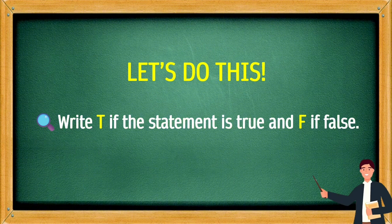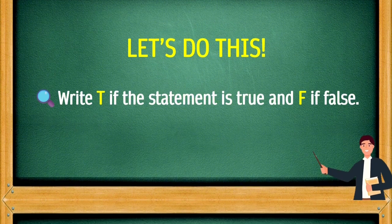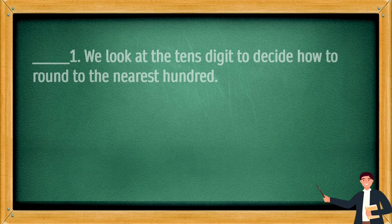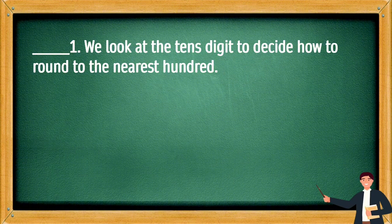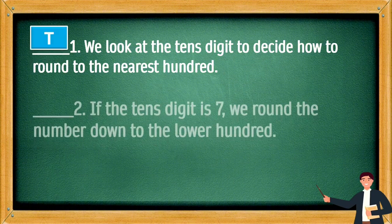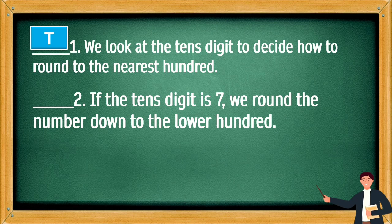Write T if the statement is true and F if false. We look at the tenth digit to decide how to round to the nearest hundred. If the tenth digit is 7, we round the number down to the lower 100. This is F.